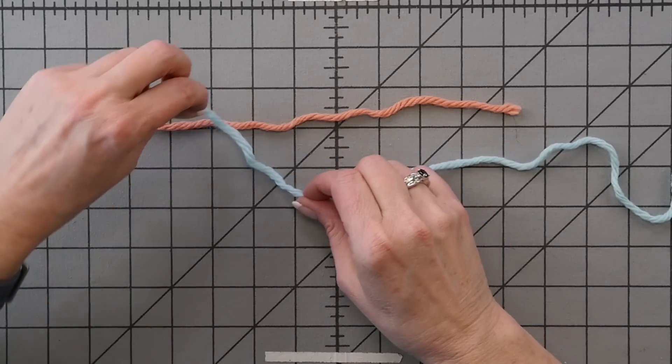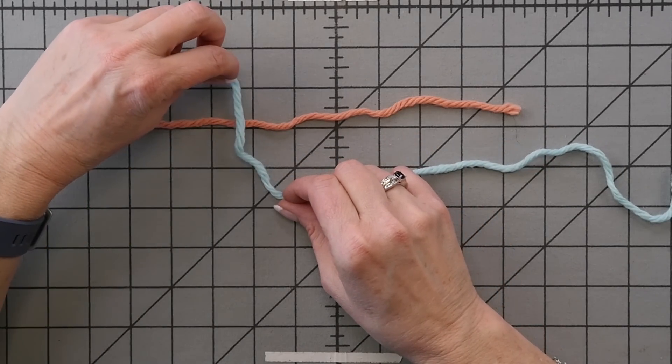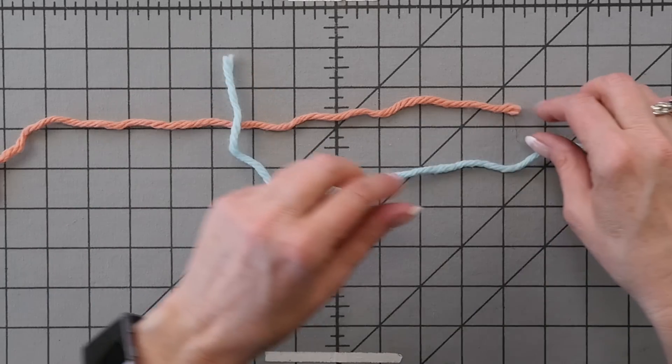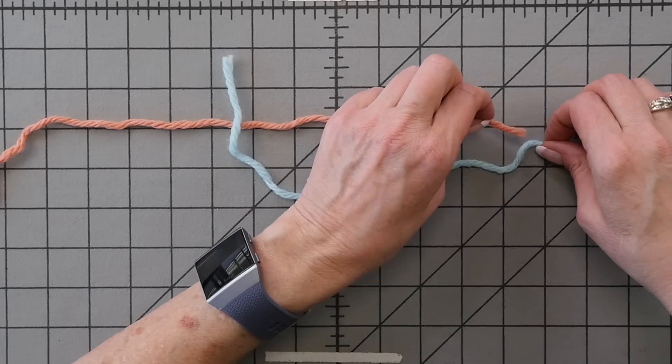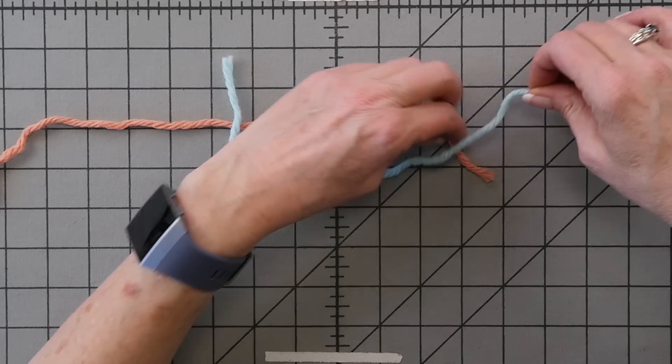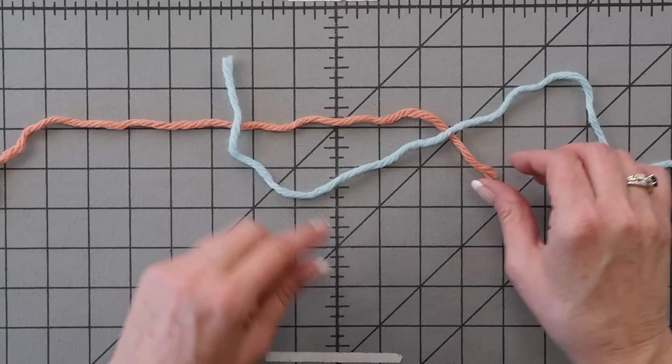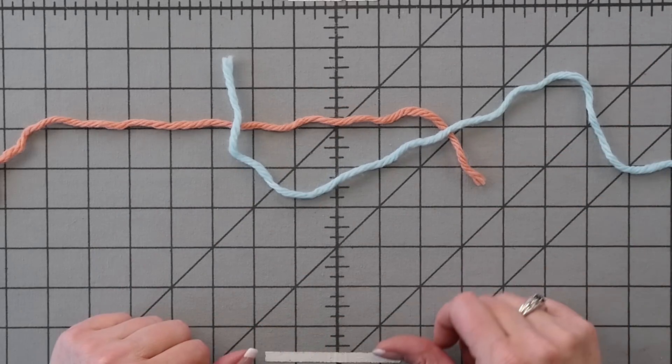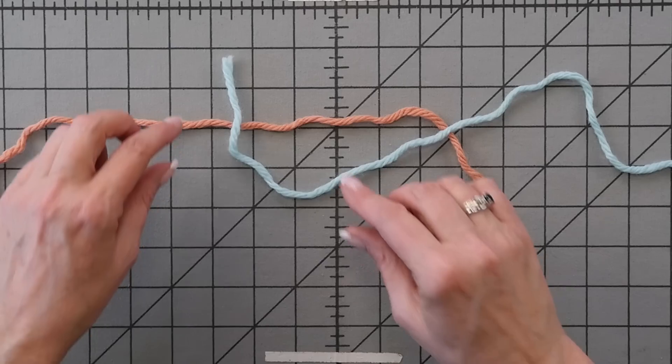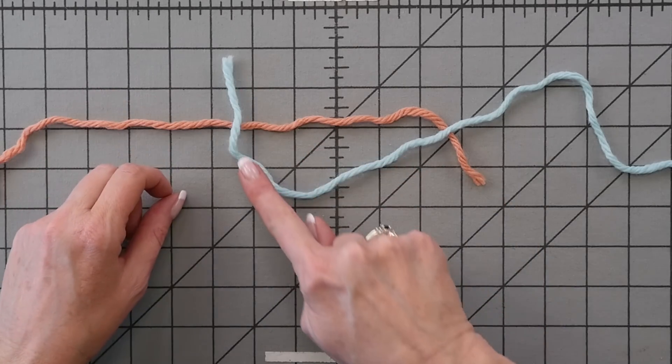In this example, I have the two ends of yarn that I want to tie together with the magic knot. We'll pretend the pink one is the one attached to my work, and the blue one is the new ball of yarn. And it helps to set it out like this. You'll see the new ball of yarn crosses over the old ball of yarn in two places.